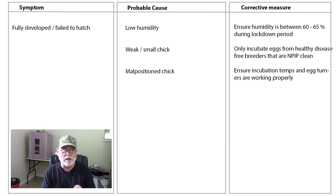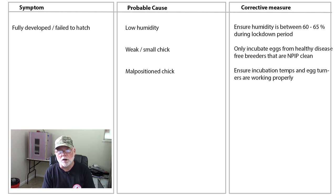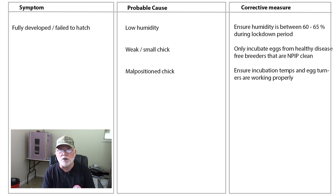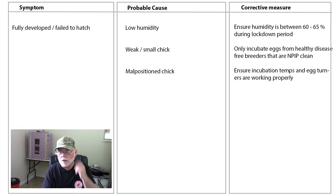The next issue is a fully developed chick that fails to hatch. This could be caused by low humidity, a chick that's too weak or too small to pip the egg, or a malpositioned chick. Malpositioning is usually caused by inconsistent incubation temperatures or egg turners not working properly; when you go to lockdown, lay the eggs in the hatching tray on their sides so the chick can position itself for hatching. Humidity should be monitored — between 35 and 50% during incubation and between 60 and 65% during lockdown.